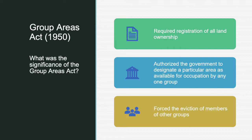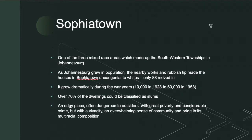The Group Areas Act required registration of all land ownership, authorized the government to designate a particular area as available for occupation by any one group, and forced the eviction of members of other groups. Sofiatown was one of three mixed-race areas which made up the southwestern townships in Johannesburg. As Johannesburg grew in population, the nearby works and rubbish tip made the houses in Sofiatown uncongenial to whites — only 88 moved in. It grew dramatically during the war years, from 10,000 in 1923 to 60,000 in 1953. Over 70% of dwellings could be classified as slums. It was an edgy place, often dangerous to outsiders, with great poverty and considerable crime, but with a vivacity, an overwhelming sense of community, and pride in its multiracial composition.